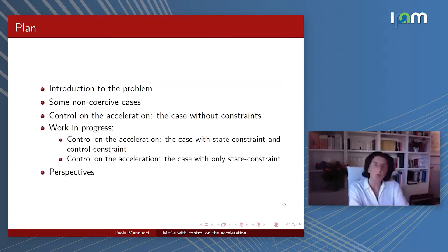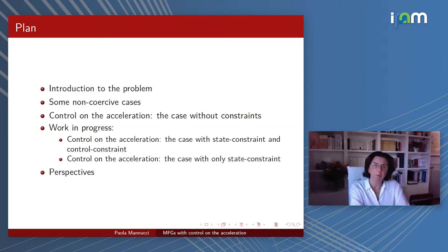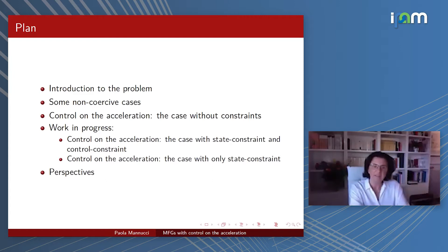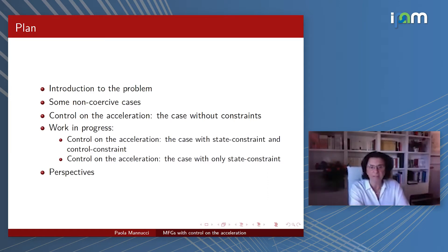The plan of my talk is the following. I will briefly introduce the problem — the deterministic mean field games — and then I will briefly present three examples where the Hamiltonian is non-coercive. Then I will focus my attention on the third case, the case where we have control on the acceleration, and explain the unconstrained case: the existence and the representation formula for the solution. In the last 15 minutes, I will speak about two works in progress with Ivar Du, Claudio Marchi, and Nicoletta Chu, where we have control on the acceleration but also constraints.